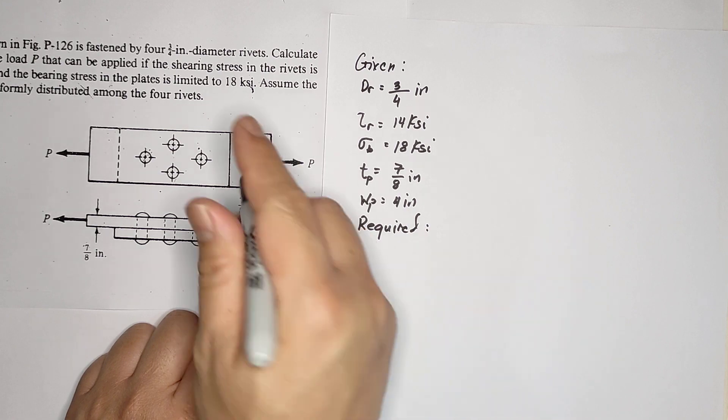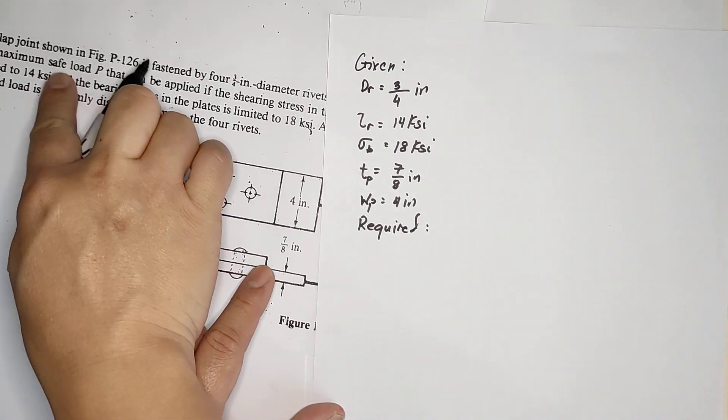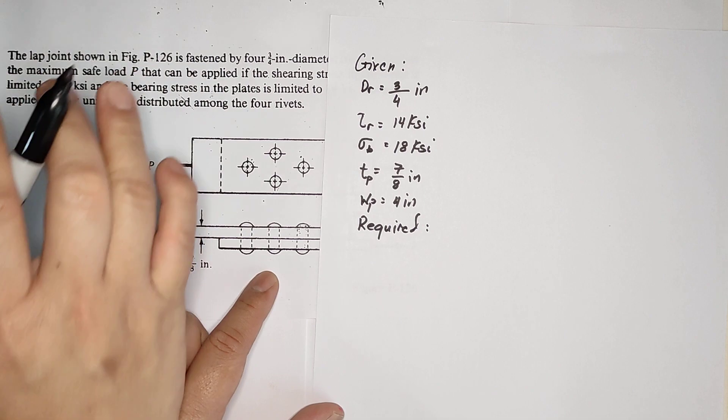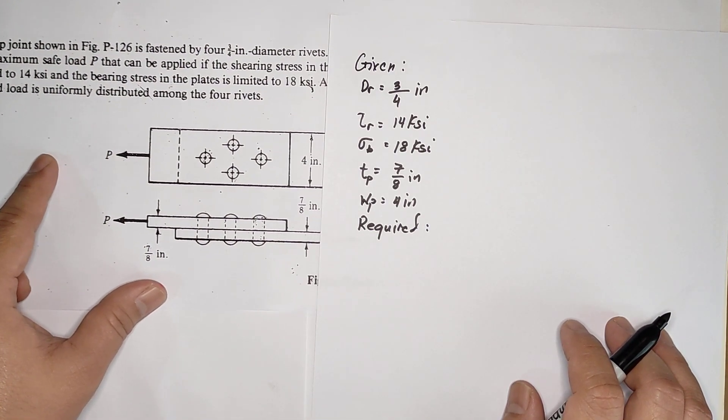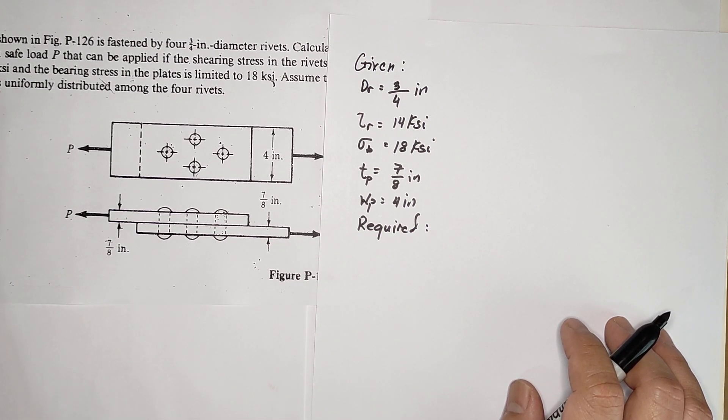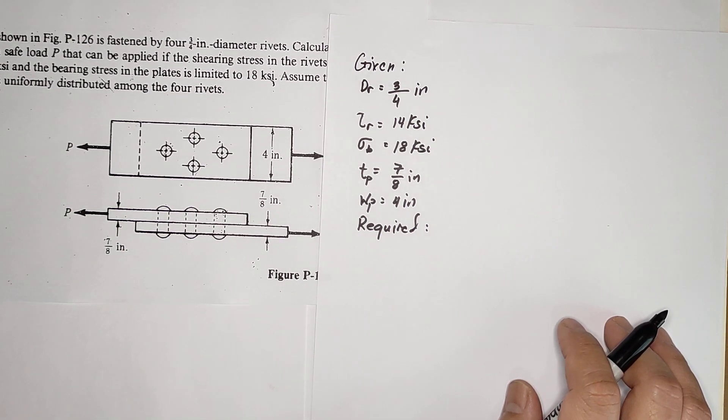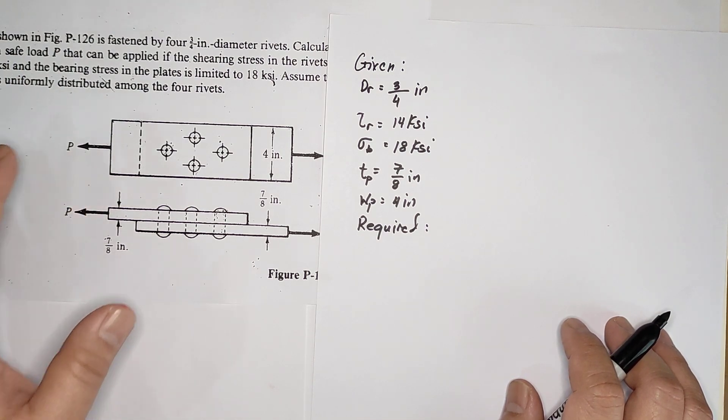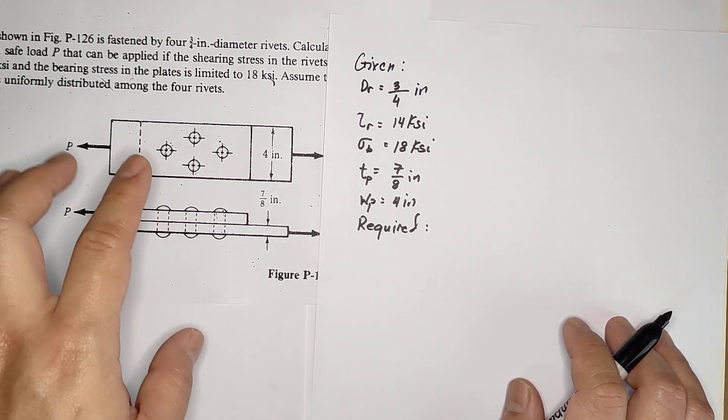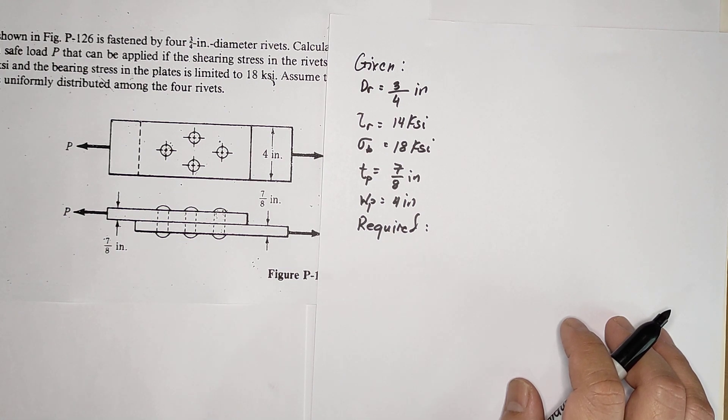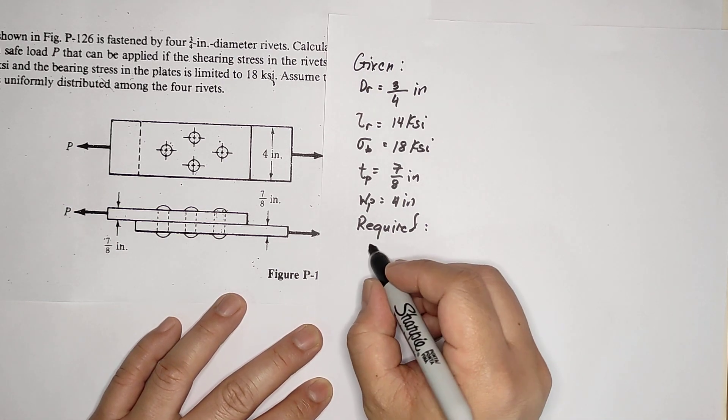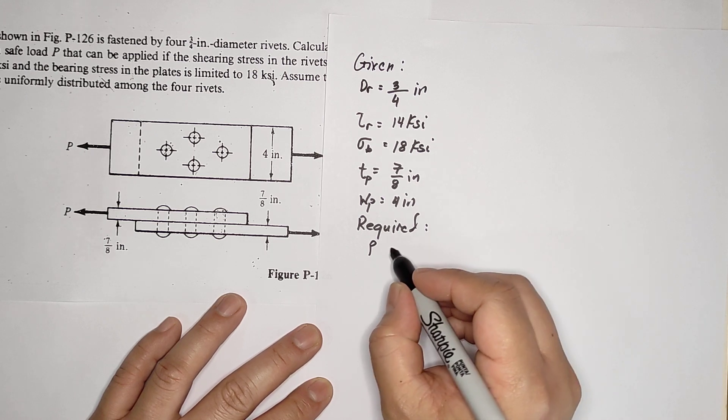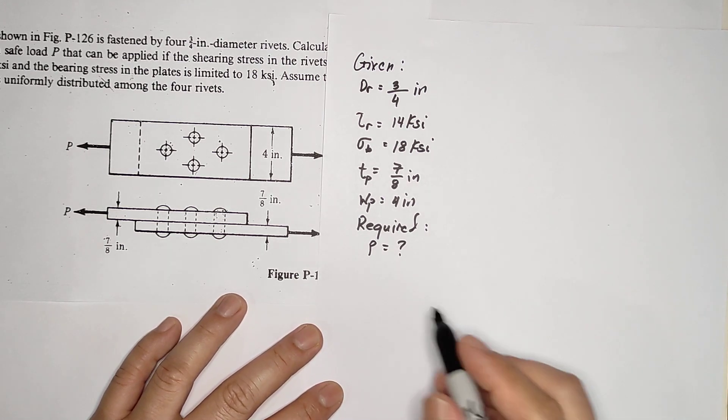We're going to calculate the minimum - it says maximum safe load, so it means the limit, the maximum load before failure so the rivet and plate won't break.